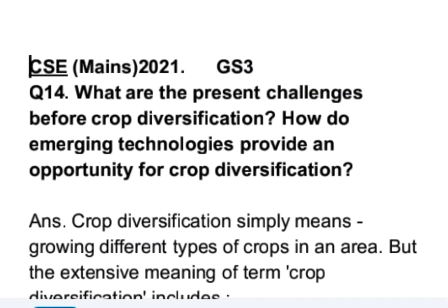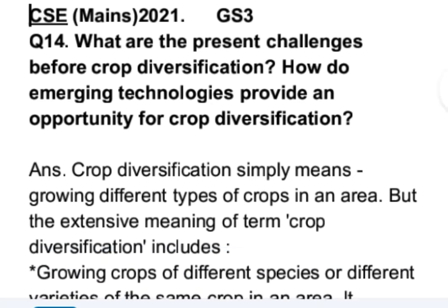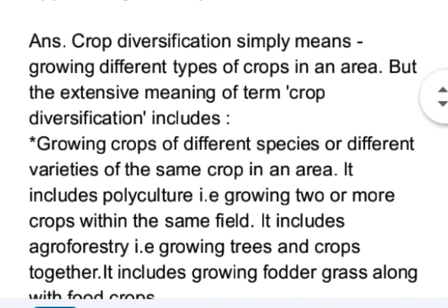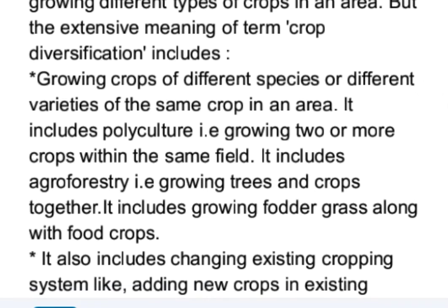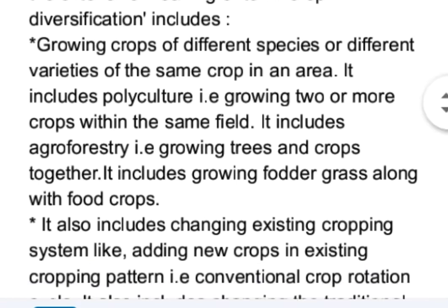This is question number 14 from GS Paper 3 of MAINS 2021 examination. The question is: what are the present challenges before crop diversification? How do emerging technologies provide an opportunity for crop diversification? I start the answer with what is crop diversification. Although there is no need to write this much detailed meaning in the actual answer, I have given the meaning of crop diversification in detail to clarify the concept.